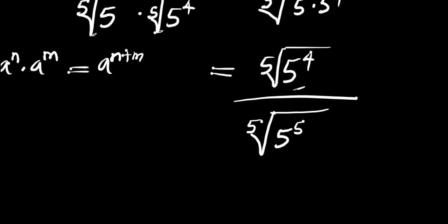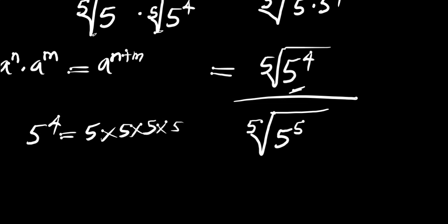Now let's find out what 5 raised to the power of 4 is. Remember that 5 raised to the power of 4 equals 5 times 5 times 5 times 5, which gives us 625. We are going to insert this value now.